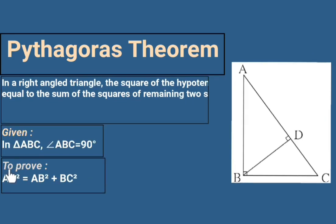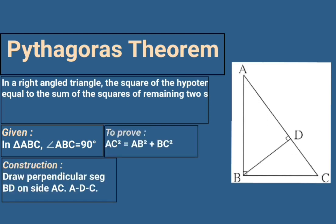To prove AC² = AB² + BC², we need one construction: draw perpendicular segment BD on AC, where D lies on AC. This is the construction — segment BD is perpendicular to AC, with A-D-C collinear.